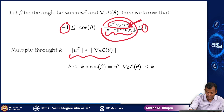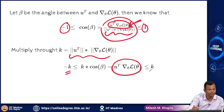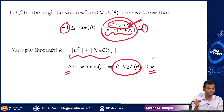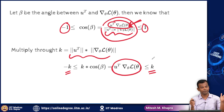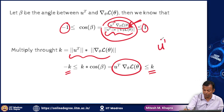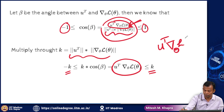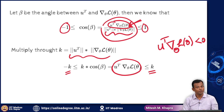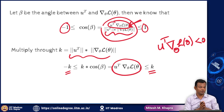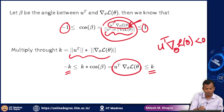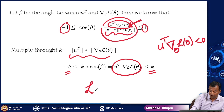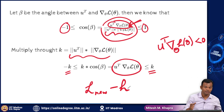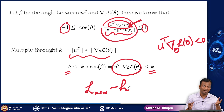If I multiply throughout by the denominator — calling it k — I get that the quantity of interest lies between −k and k. I do not care about the positive values; I want this quantity to be less than 0. I care about the negative side because my condition is that u^T times the gradient should be less than 0. The quantity is the difference between the new loss and the current loss, and the more negative this difference, the better — that means my new loss is as low as possible from the current loss.